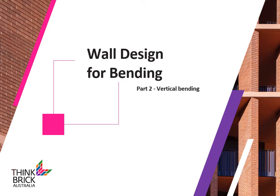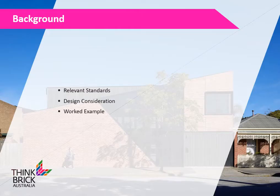Welcome everyone to part 2 of Wall Design for Bending, presented on behalf of ThinkBrick Australia. This is the second part to the Wall Design for Bending series, covering vertical bending. This presentation will go through relevant standards such as AS3700 Masonry Structures, and outlines some design considerations for vertical bending, as well as a worked example for a brick wall.